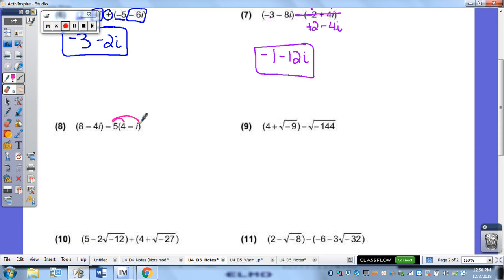For 8, I'm going to distribute this negative 5. So, I get a negative 20 plus 5I. And I'm going to bring down my first parentheses. There's nothing in front of it, so those ones aren't going to change. So, I'm going to combine my like terms. So, I'm going to subtract those. I get negative 12. Subtract those ones. We get a positive 1I. Which, remember, we don't have to write that 1. We can leave it as just I.